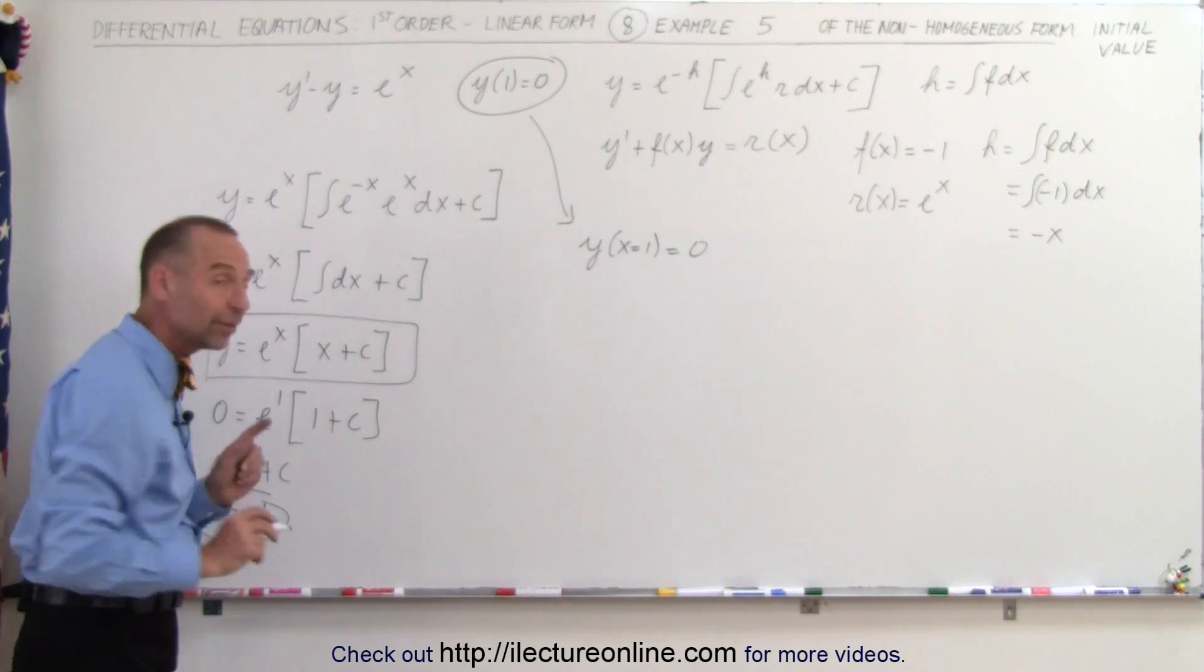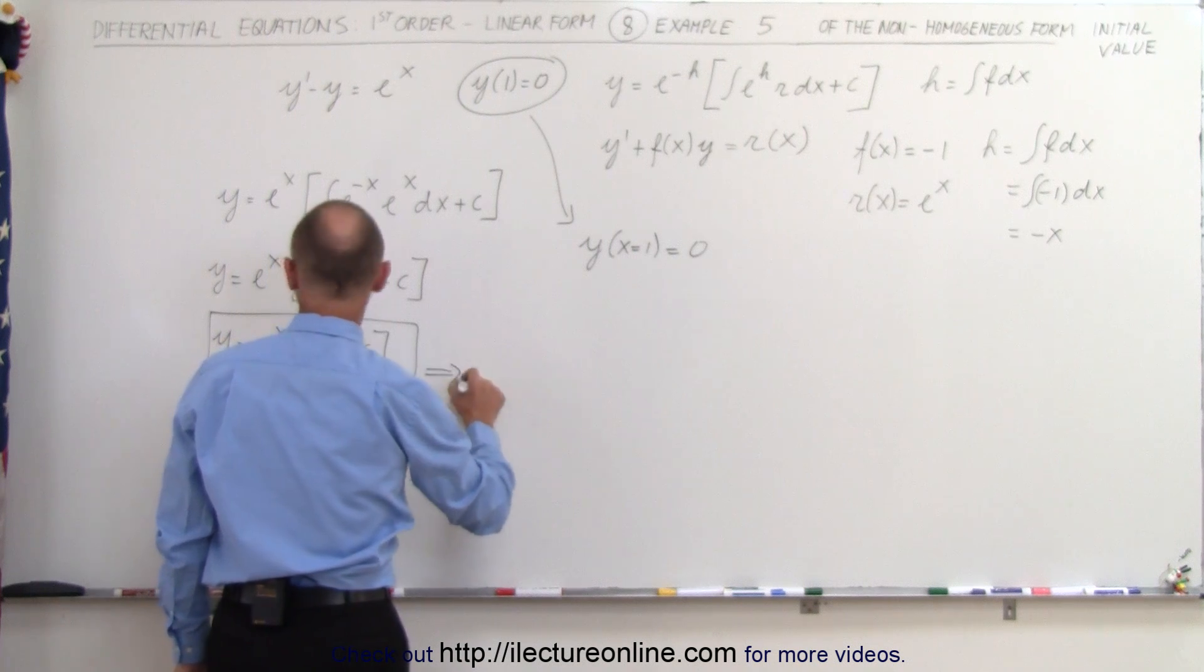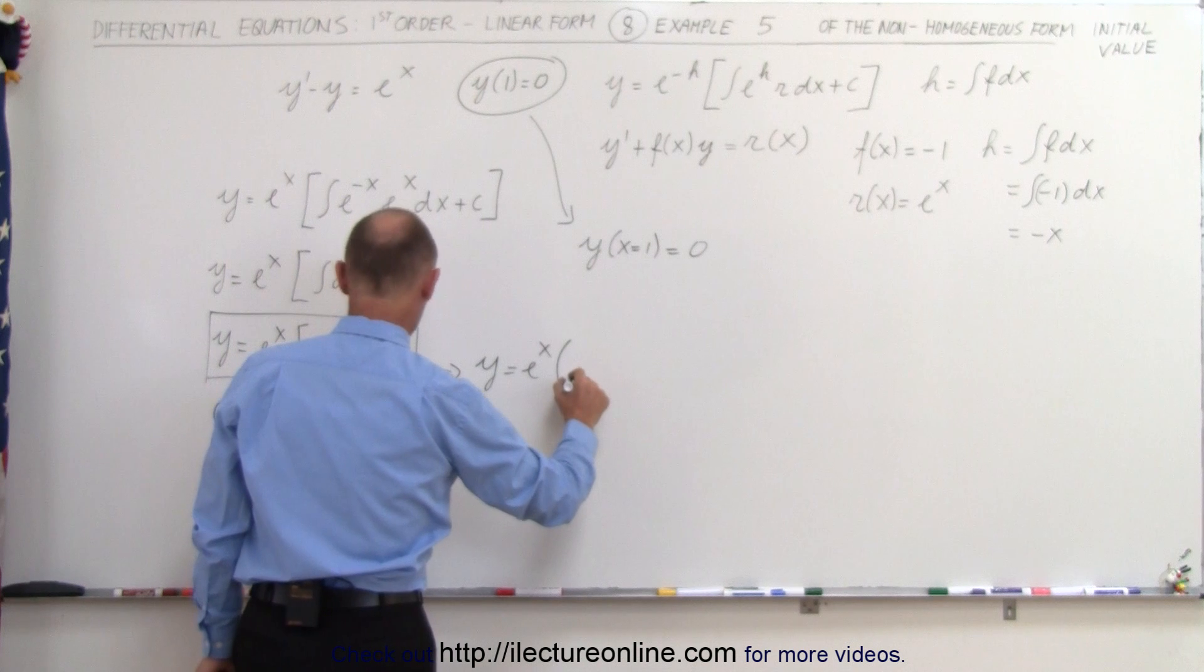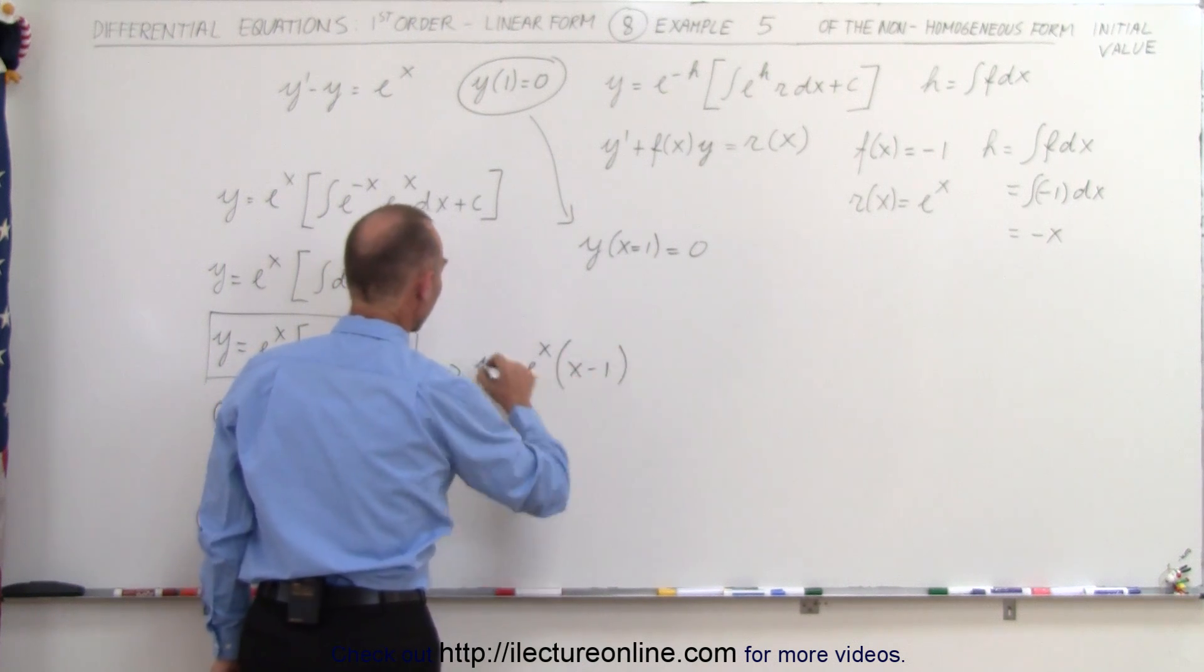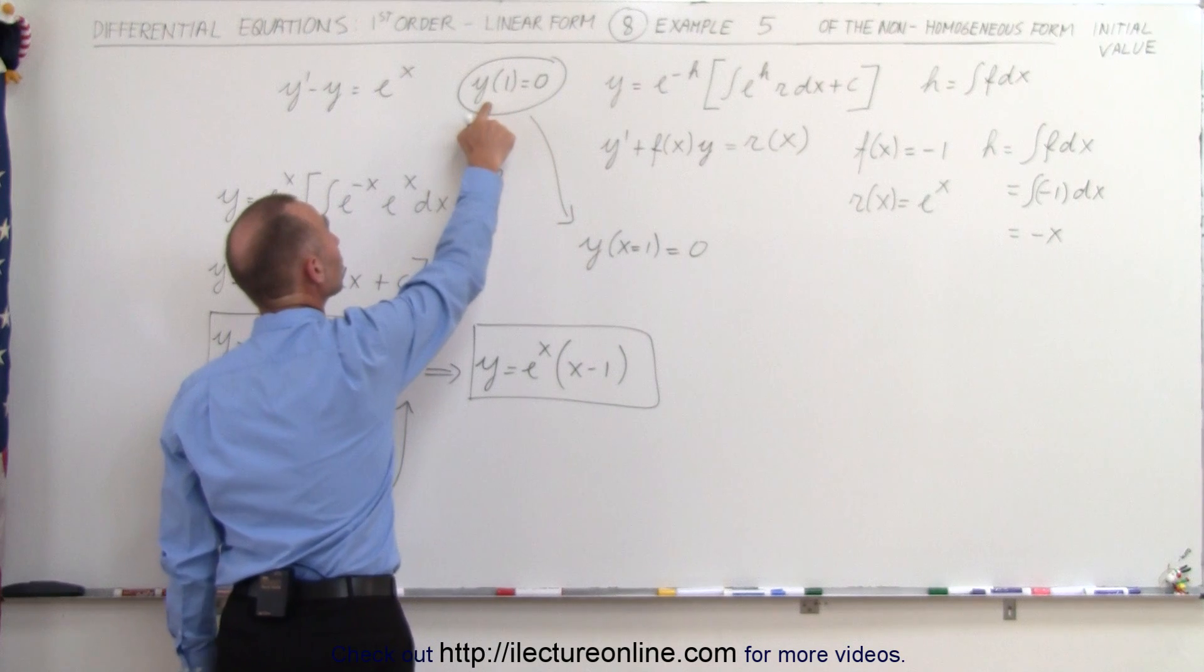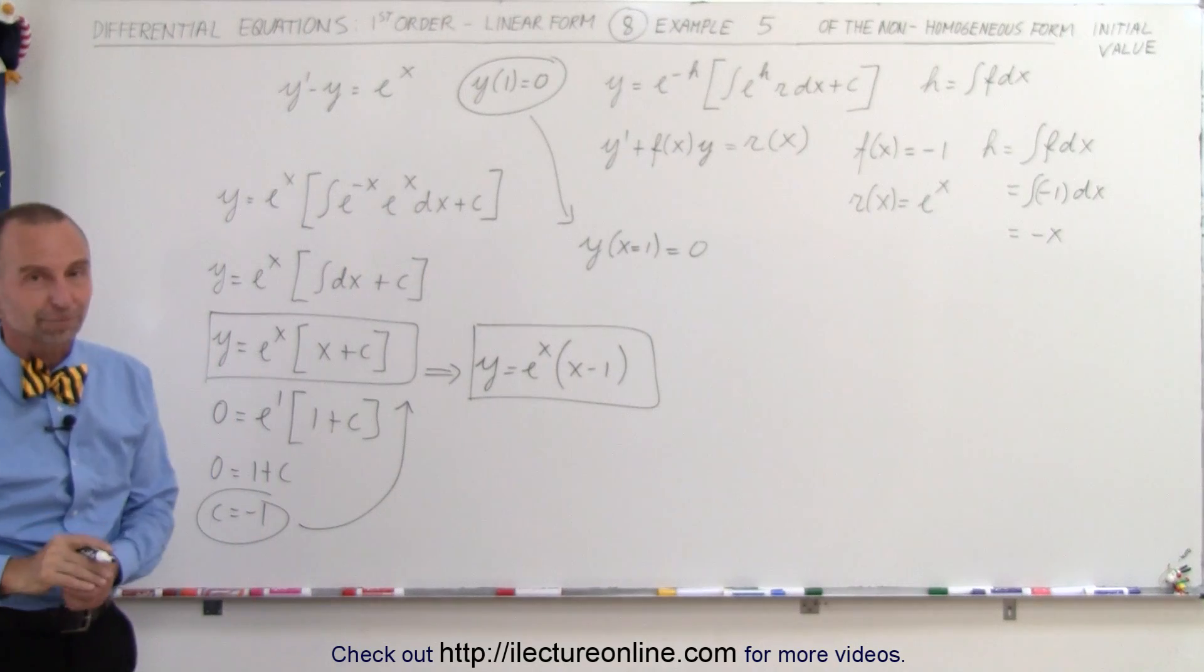So from this, we discover that c is equal to minus 1, so we'll plug that back in here. The equation then becomes y is equal to e to the x times x minus 1. And that would then be the solution to the differential equation with the initial condition, that when x is equal to 1, y is equal to 0. That's the solution.